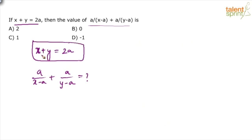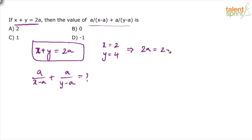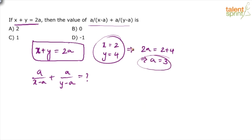Satisfy this condition using some values of x, y, and a, then substitute those same values into the expression — whatever you get is the answer. Let us assume x = 2 and y = 4. Then 2a = 2 + 4 = 6, which means a = 3. You're done. Indirectly, x = 2, y = 4, a = 3. You can take any values for x and y, find a accordingly, and substitute back.